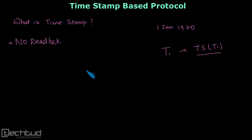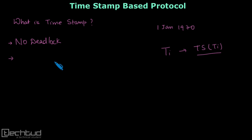The basic idea is that we order transactions on the basis of their time of arrival, and that is why we call it timestamp ordering.